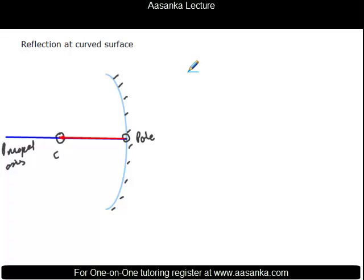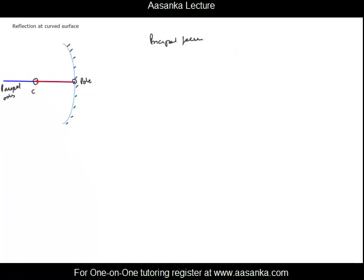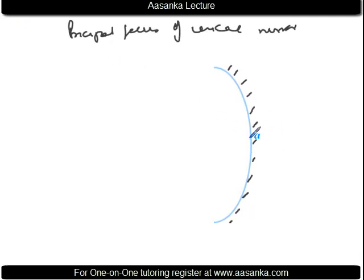Now we discuss two terms — one is the principal focus of a concave mirror. To understand this, let's go to basics. The pole is the geometric center, and the radius of curvature is the center of the circle. Any line drawn from the center of circle to any part of the circle will be normal — so any line from center of curvature to any part of the mirror will be normal to the mirror.